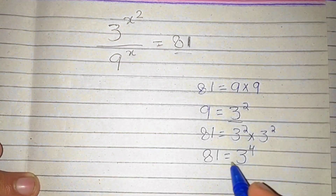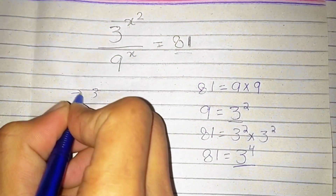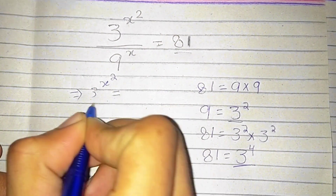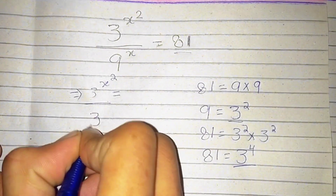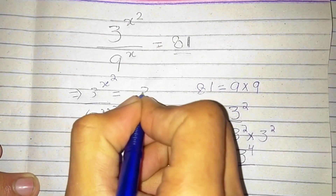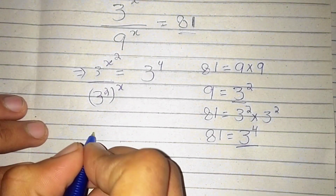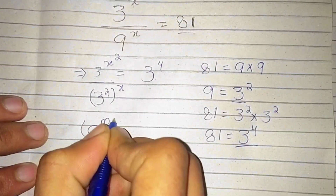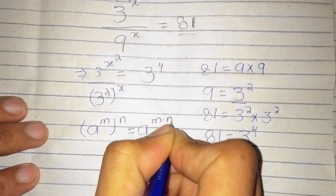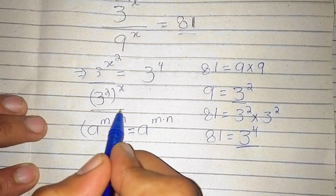Now replace 9 by 3 squared and 81 by 3 power 4 in the equation. It becomes 3 power x, whole power 2, divided by 3 squared, whole power x, is equal to 3 power 4. We have the identity that a power m, whole power n, is equal to a power m times n.